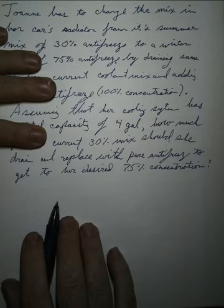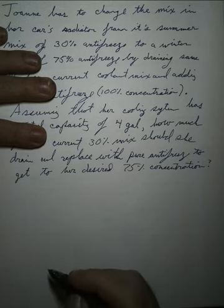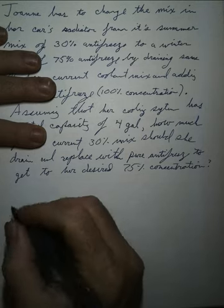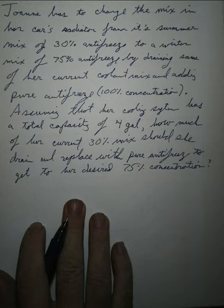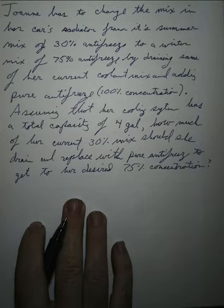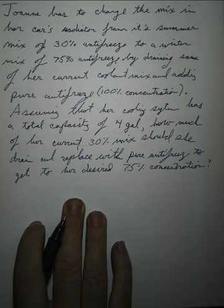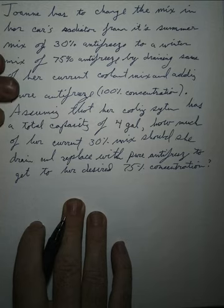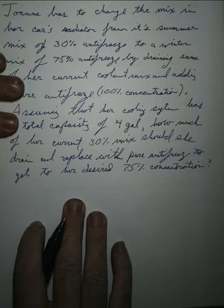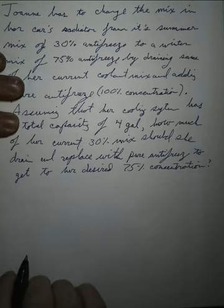Remind yourself where you can add. You can add amounts, but you can't add the rates until you multiply by the weights. Let's look at this particular problem. Joanne has to change the mix in her car's radiator from its summer mix of 30% antifreeze to a winter mix of 75% antifreeze by draining some of her current coolant mix and adding pure antifreeze.